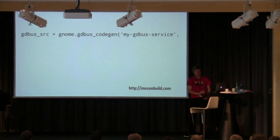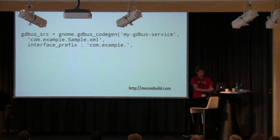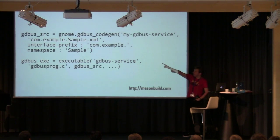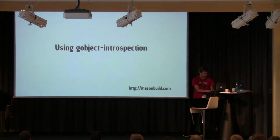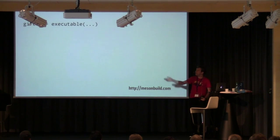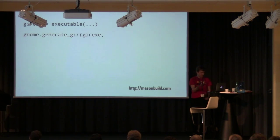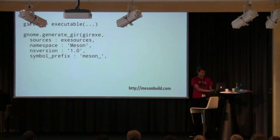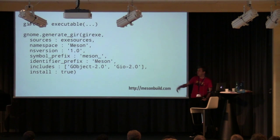For GDBus, there's a function for that with a name, an XML interface file, interface prefix, and other parameters - you get an opaque object back, put it in your sources, compile, and it does the right thing. For GObject introspection, which is a bit trickier: you first build the executable you want to introspect, then run the introspection command on it, specifying source files to scan, namespace, version, and whether you want it installed.